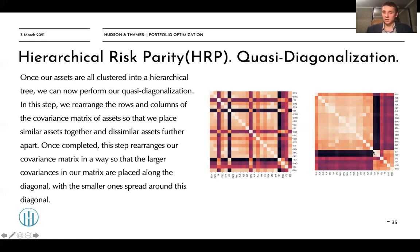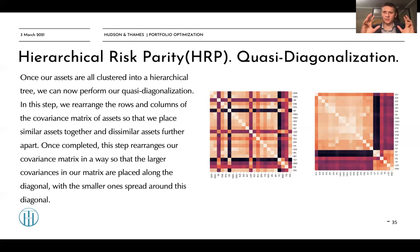The quasi-diagonalized covariance matrix is now much more clustered. We can see distinct covariance clusters, including a bonds cluster and an equities cluster with several sub-groups inside. Quasi-diagonalization applies the logic of our dendrogram hierarchy into the covariance matrix — it groups covariances that are not far from each other. So our covariance matrix now shows not only dependence, but also hierarchy properties.